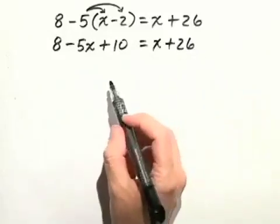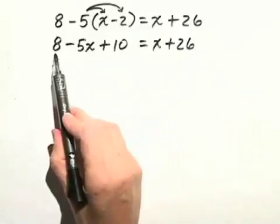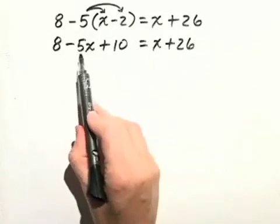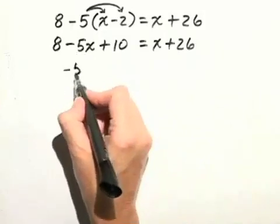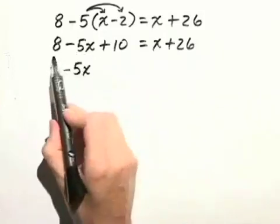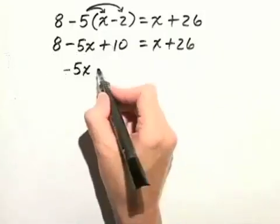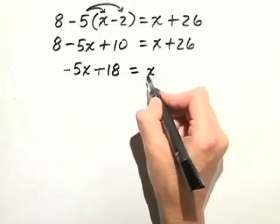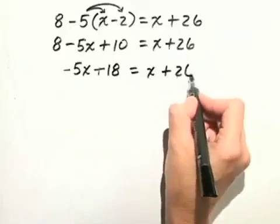Now before we go on, on the left hand side we have some constant terms that we can combine to simplify it. So first I have negative 5x, and then I'll combine the 8 and the 10 to get 18. That's equal to x plus 26.